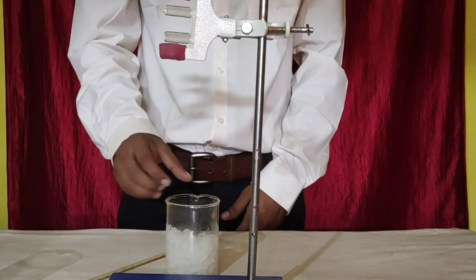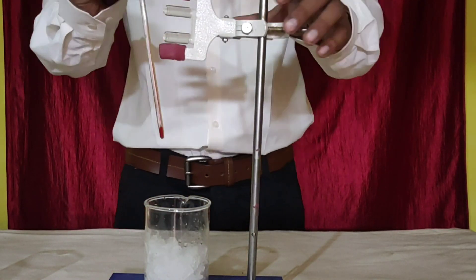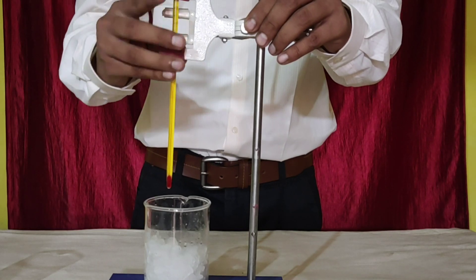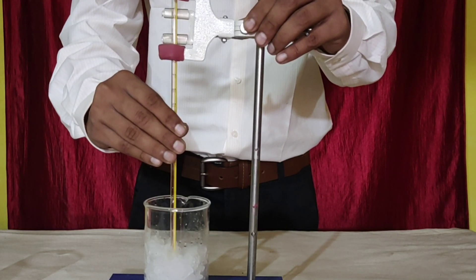How will you proceed? Take crushed ice in the beaker, and hang the thermometer from the clamp of the stand in such a way that the bulb of the thermometer is completely inside the ice.